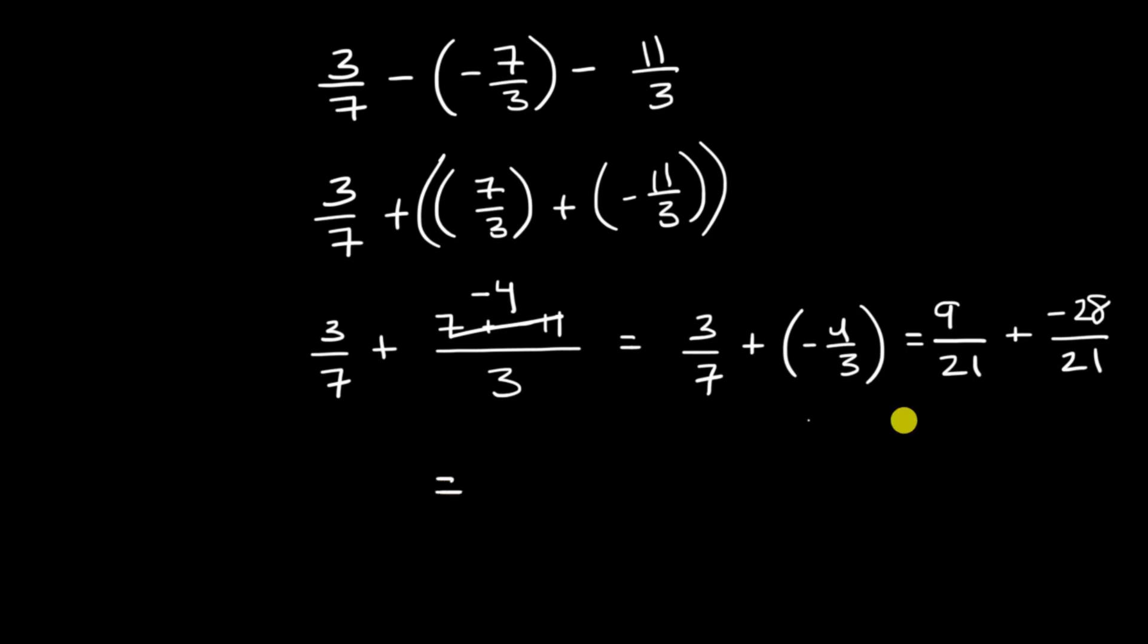And so this is going to be equal to 9 plus negative 28 over 21, which is the same thing as 9 minus 28 over 21, because subtracting a number is the same thing as adding its opposite. And so this gets us, let's see, if 9 minus 9 is 0, and then we're going to have 19 more to go below 0. So this is negative 19 over 21. And we are done.